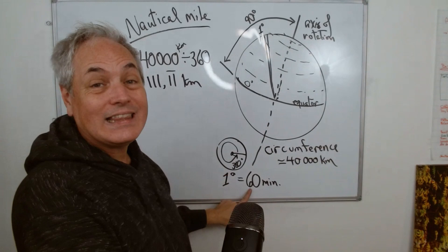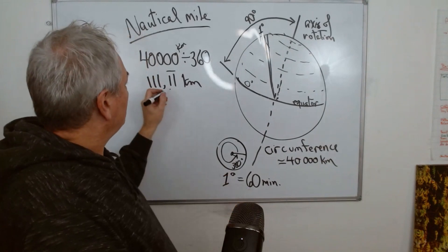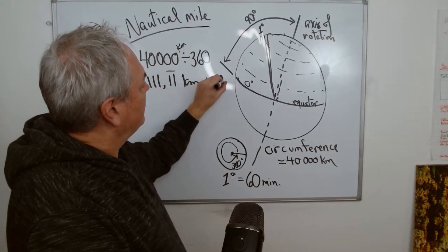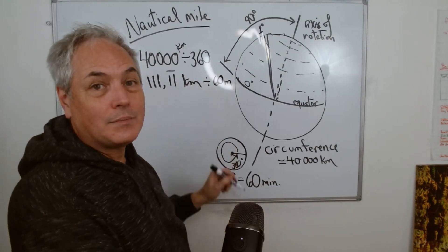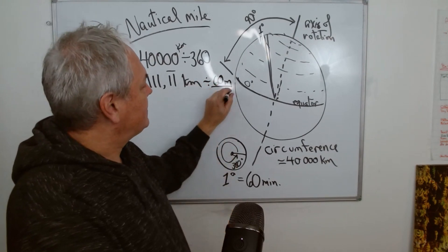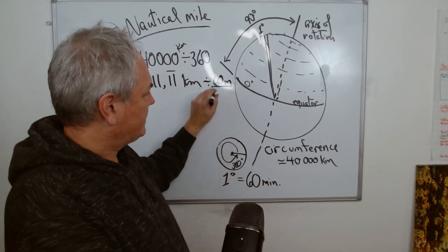So I'm going to take this and divide by 60 minutes, because there's 60 minutes per degree.